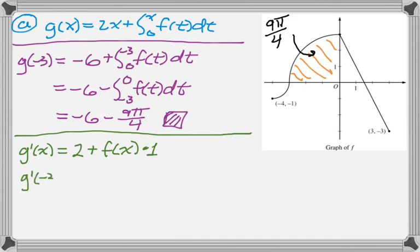Now I have to find g prime of negative 3, which is actually easier than finding g of negative 3. Just go to the graph and you can see that at negative 3, f is 0. So we just get 2. And that's part A.